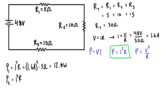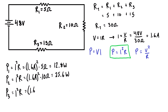For the second resistor, P2 equals I²R again using the same current of 1.6 amps, since current is the same everywhere in a series circuit, times 10 ohms — giving 25.6 watts. For the third resistor, P3 equals 1.6 amps squared times 15 ohms, which gives 38.4 watts.